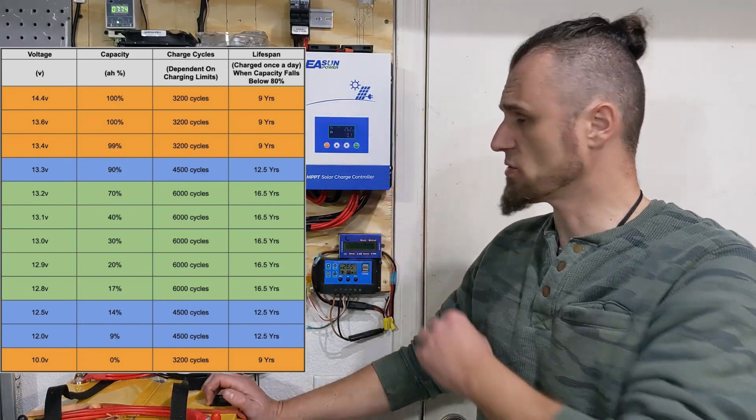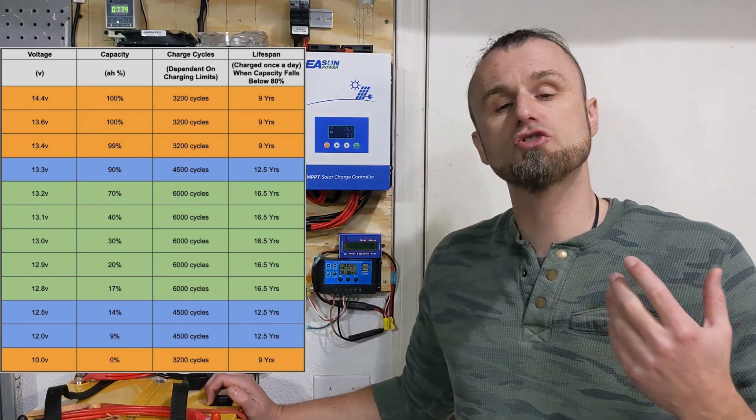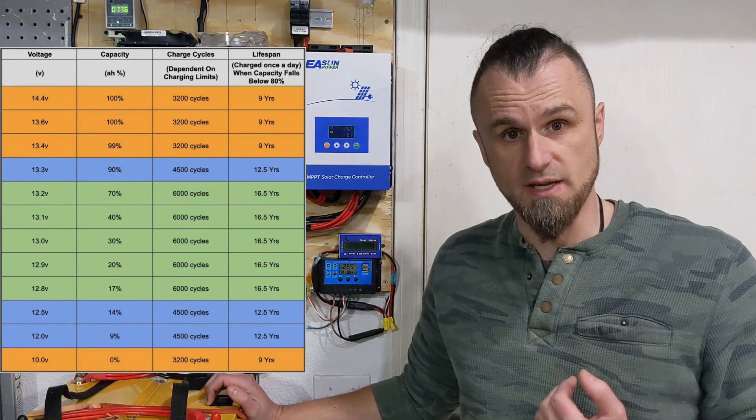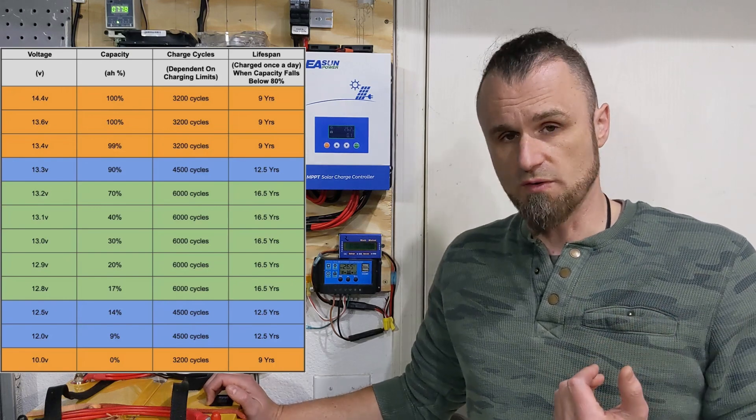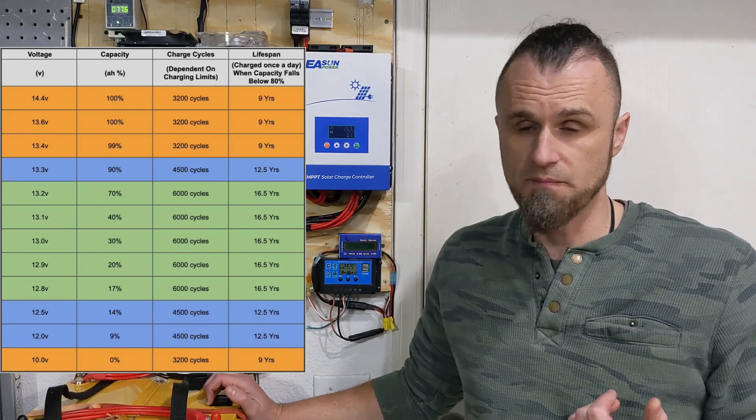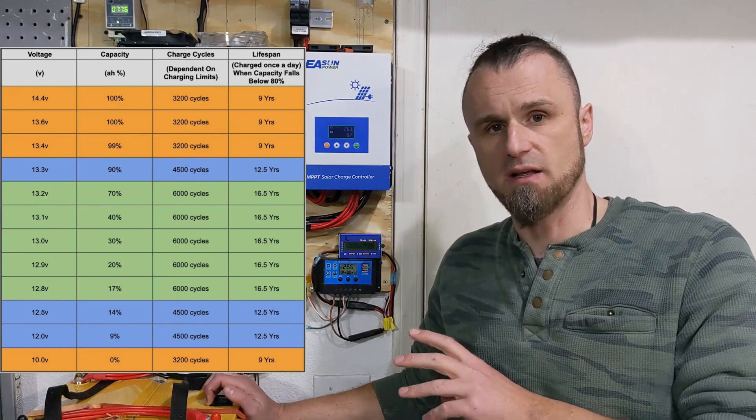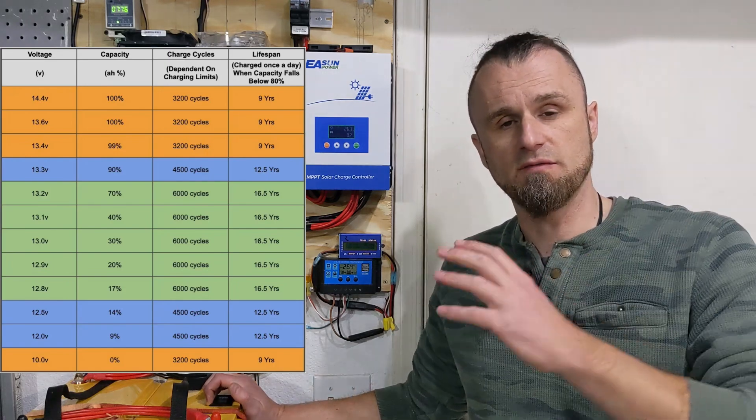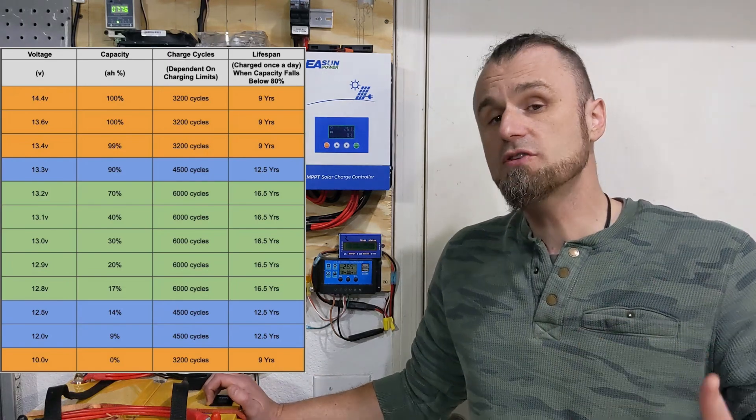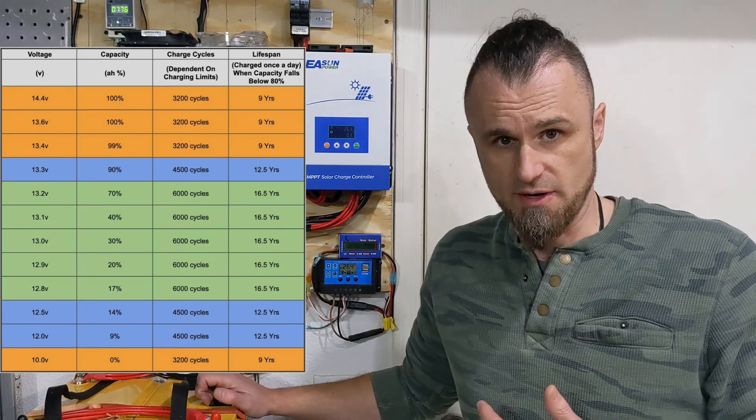So this charge controller, it's set up right now to stop charging at 26.6 volts, or 13.3, which is about 80% where the top capacity of these batteries is. That theoretically extends the life of the battery.